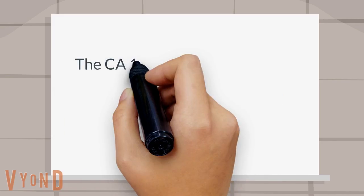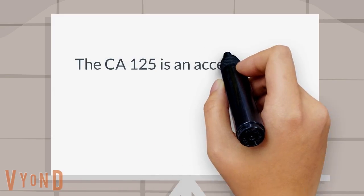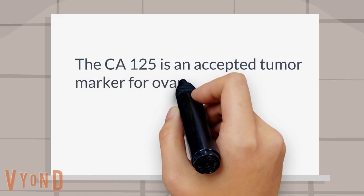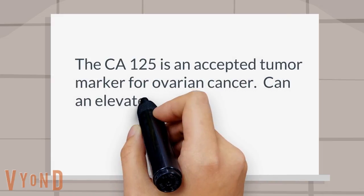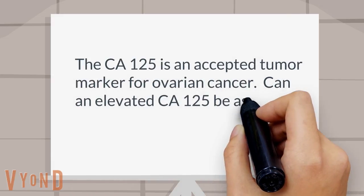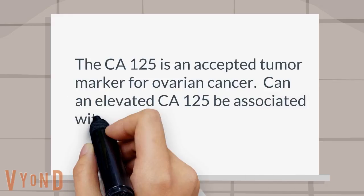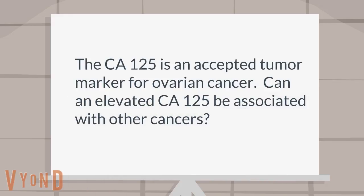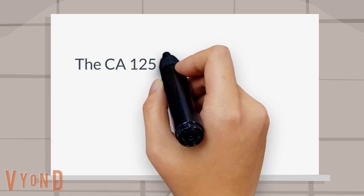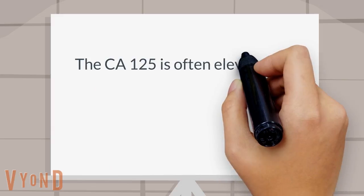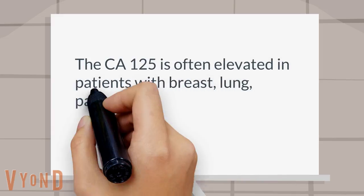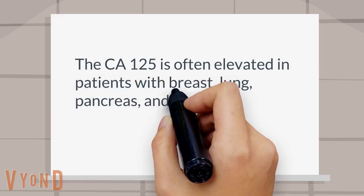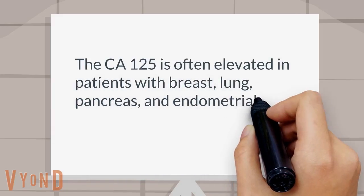The CA125 is an accepted tumor marker for ovarian cancer. Can an elevated CA125 be associated with other cancers? The CA125 is often elevated in patients with breast, lung, pancreas, and endometrial cancer.